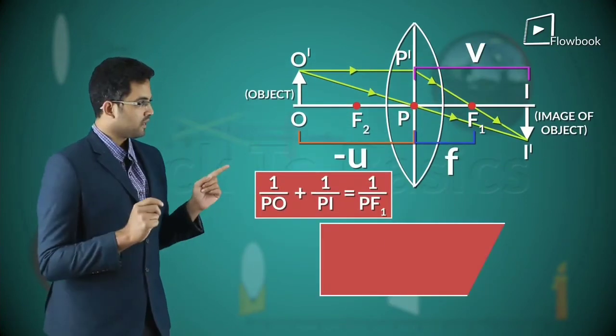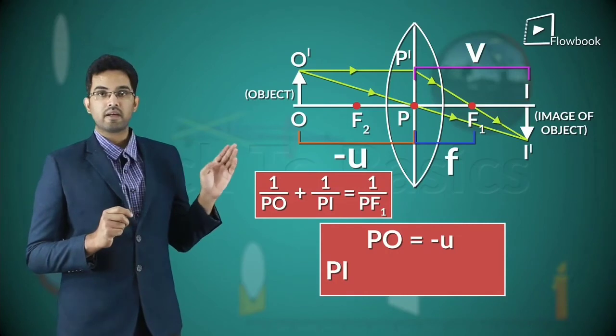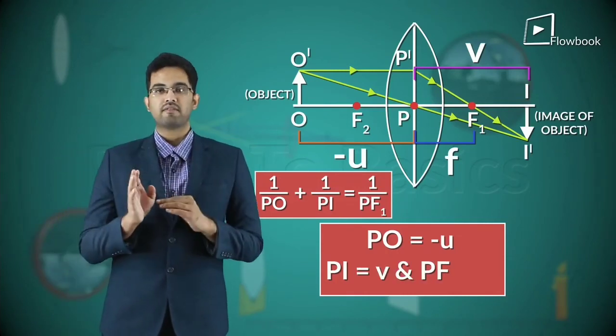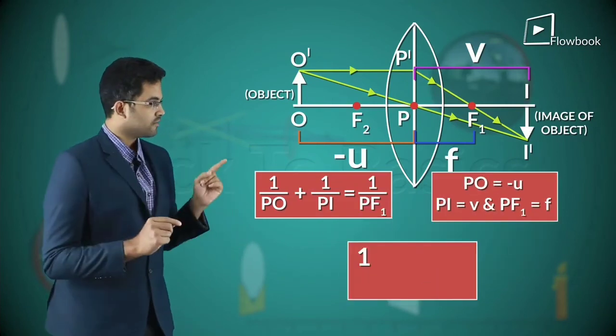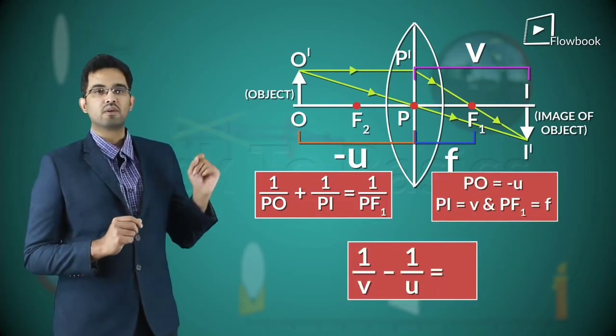Therefore, PO is equal to minus U, PI is equal to V, and PF1 is equal to F. Substituting them, we get one by V minus one by U is equal to one by F.